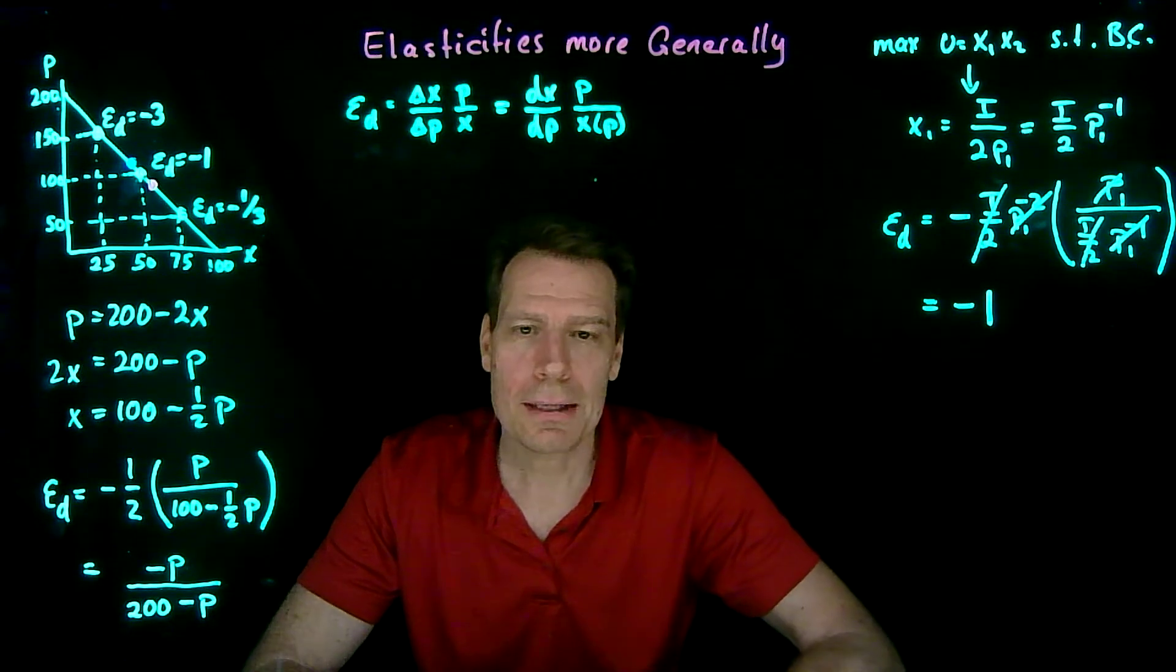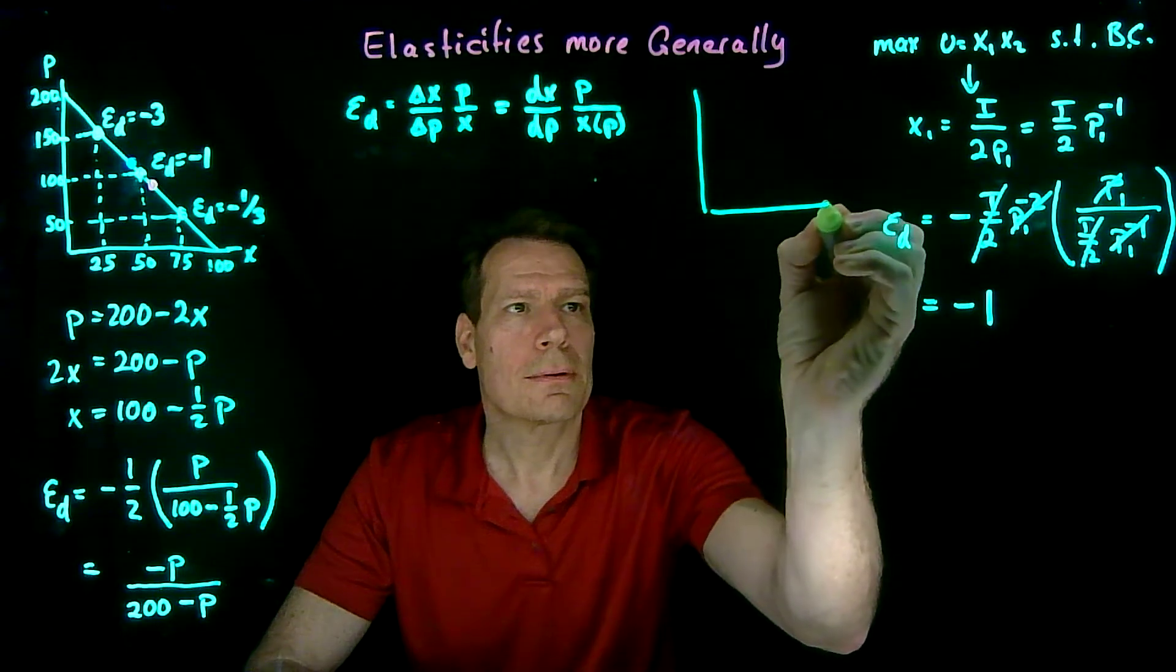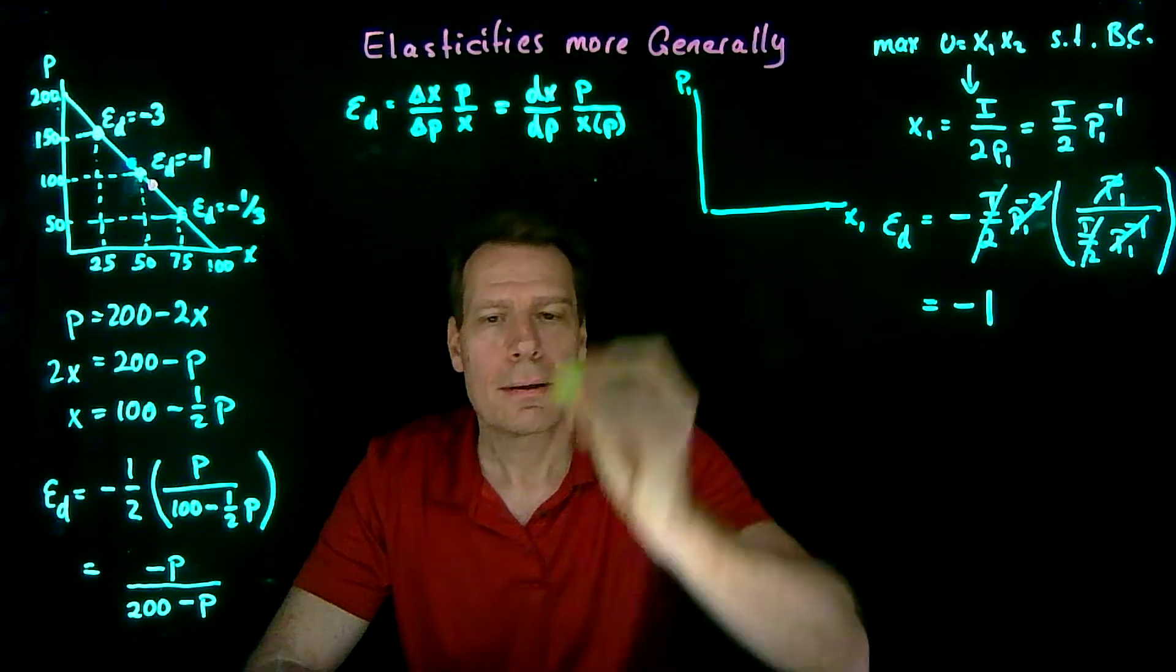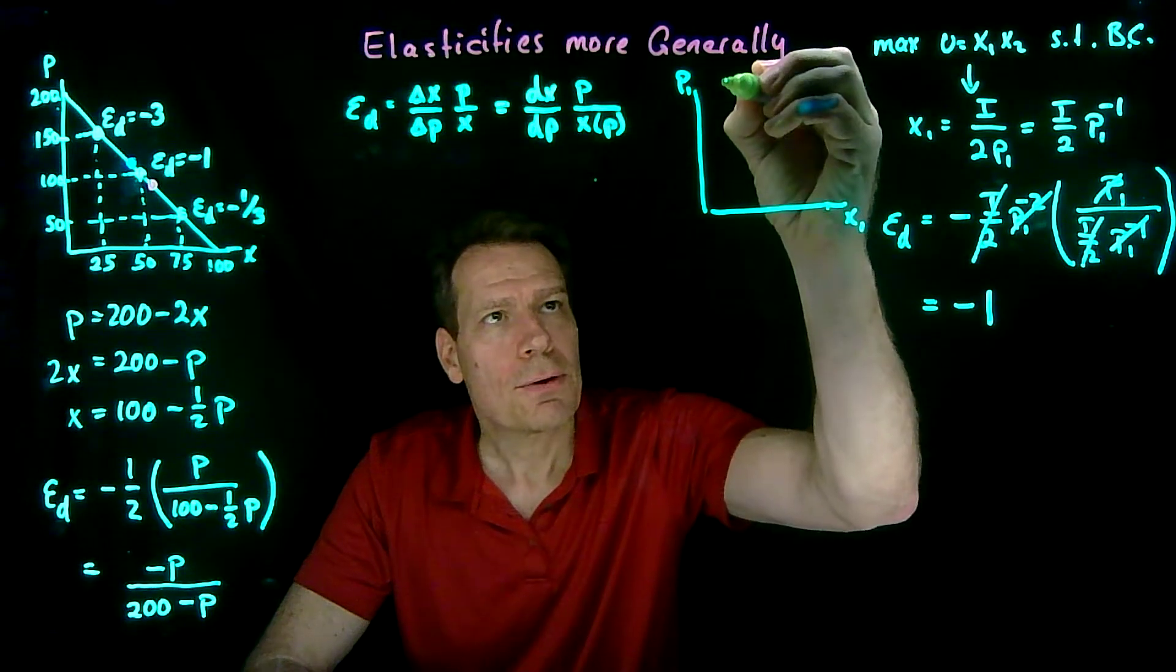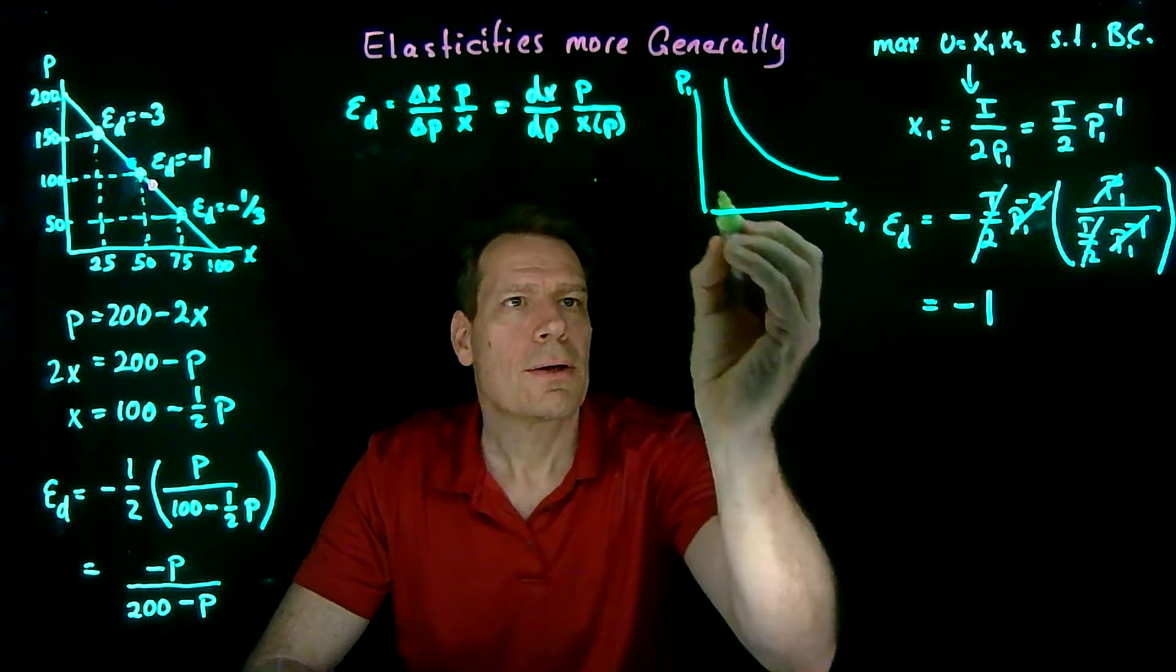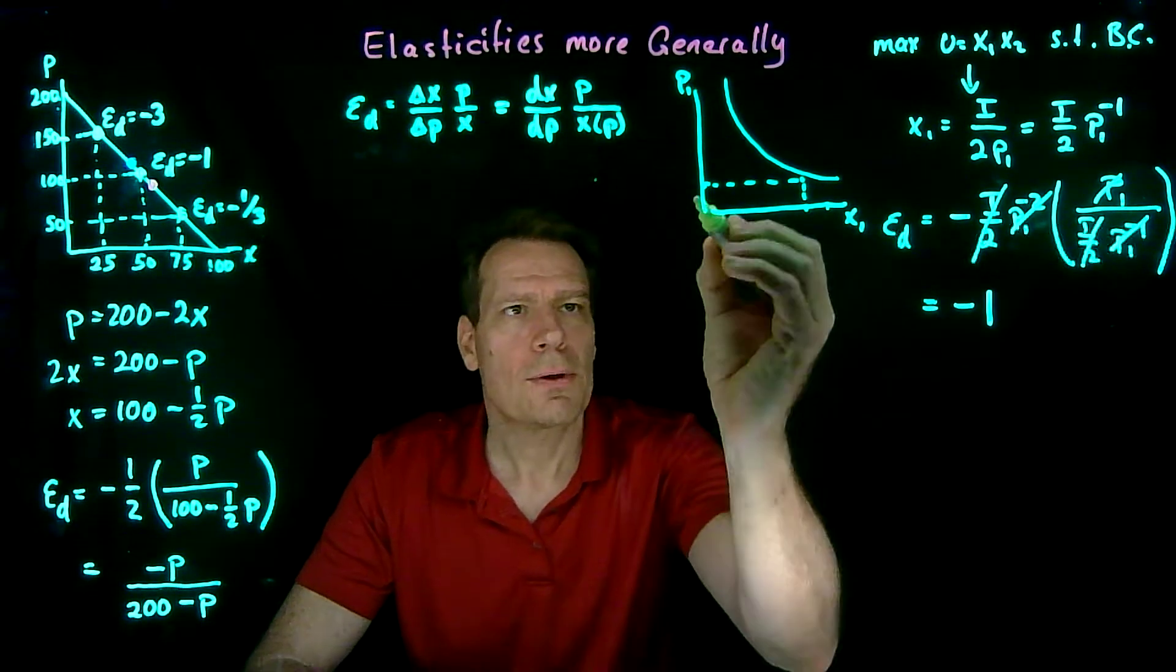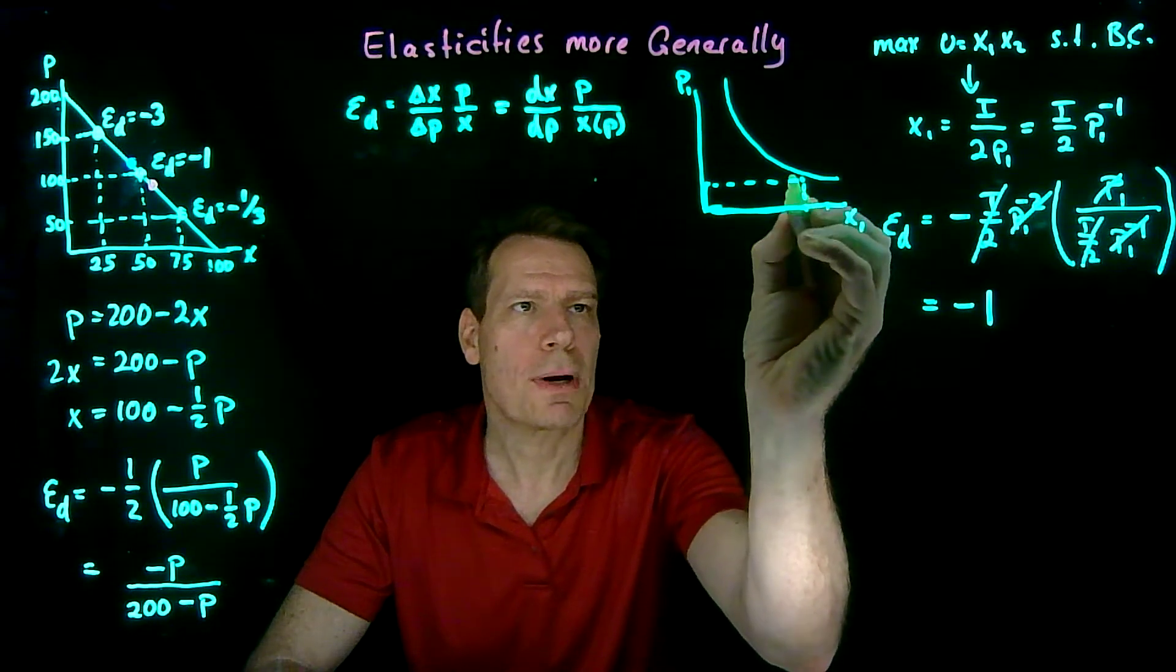What would that demand curve look like? Well, remember that when the price elasticity is equal to minus 1, consumer spending remains the same no matter what the price is. So that the demand curve is going to have to have a shape that looks something like this. So that when the price is this, we know that the spending box is price times quantity. So it's this box here.